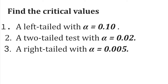For number one, find the critical values given: a left-tailed test with A equals 0.10, a two-tailed test with A equals 0.02, and a right-tailed test with A equals 0.005. There are steps to follow and things to consider depending on whether the test is left-tailed, right-tailed, or two-tailed.